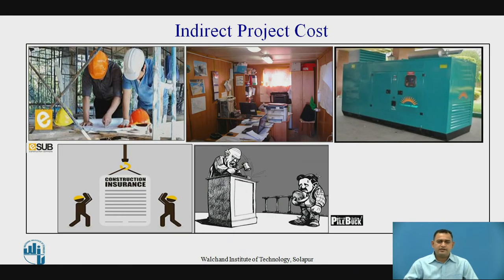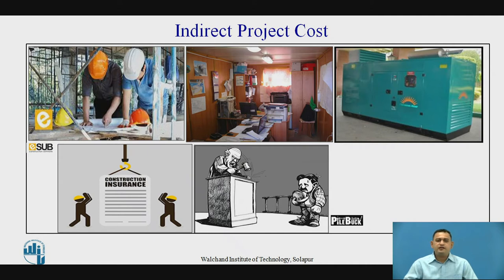Now let's see indirect cost. The indirect costs are nothing else — they are the charge costs associated with the office setup at the site, all the temporary facilities like electricity, telephone bills, stationeries and equipment or machineries required for offices like printing machines, fax, etc. And costs like a project manager, insurance costs of the construction — it may be related to the various resources involved in the project. You may also observe indirect cost due to delay in the project.